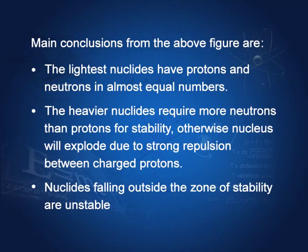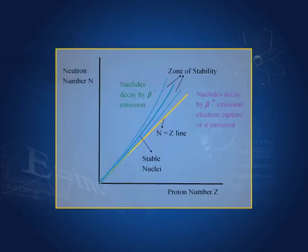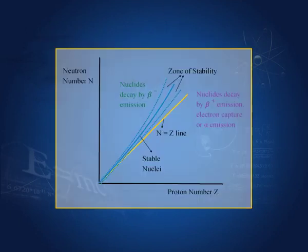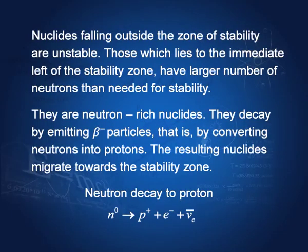Nuclides falling outside the zone of stability are unstable. Decay of an unstable nuclide produces a nuclide nearer to the zone of stability. On the proton-rich side, protons must decay to become neutrons so the nucleus migrates toward the line of stability. On the neutron-rich side, there are more neutrons than necessary, so neutrons must decay to become protons, again migrating toward the zone of stability.